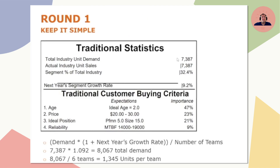In round one, you'd take your total industry unit demand and factor in the growth rate. In Capstone 2.0, you can see this as 8,067 — you don't have to calculate it yourself; just look at the marketing page and look at the demand this year. If you're in the reports, remember we're looking at last year, but we're forecasting for this year. So step one is calculate the demand for this round. In this example it'd be 8,067. With six teams, divide that by six and you get 1,345 for your forecast.